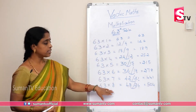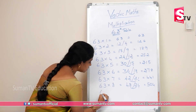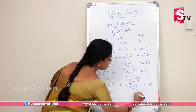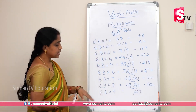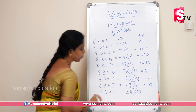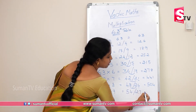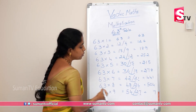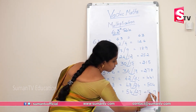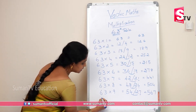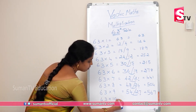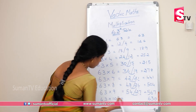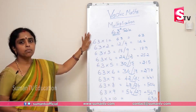63 × 9: nine threes are 27, six nines are 54. Write 7 in unit place. 54 plus 2 gives 56. So 63 × 9 is 567. 63 × 10: we all know 63 × 10 is 630. We can try and keep tables easy.